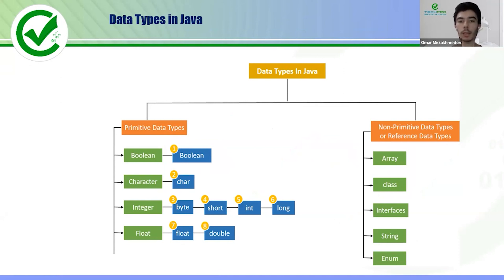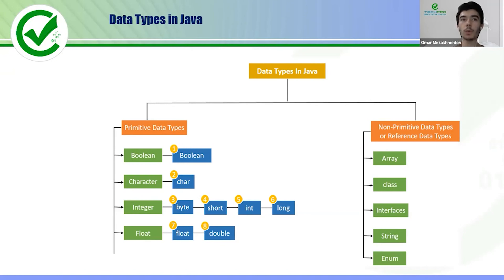Next question: data types in Java. This may be easy for some of you, but others may not answer it properly. When an interviewer asks what kind of data types you know in Java, you can say: there are two types of data types in Java — primitive data types and non-primitive, also called reference data types. In primitive data types we have eight kinds, starting with boolean, which contains true or false, and char, which contains a single character.